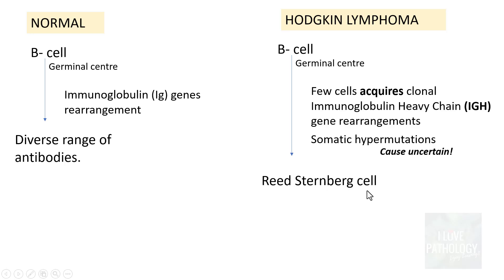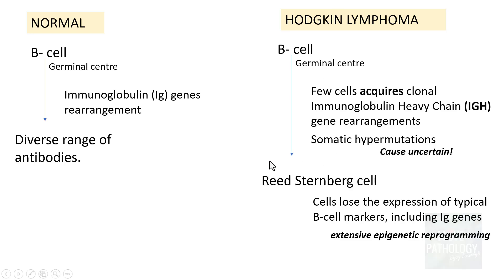The cause of somatic hypermutation and clonal IGH gene rearrangement is not really known. Once this happens, the B cell gets transformed into a neoplastic cell called the Reed-Sternberg cell. Although the Reed-Sternberg cell is a derivative of B cells, these cells lose the expression of typical B-cell markers including immunoglobulin gene markers. The reason for loss of B-cell markers is extensive epigenetic reprogramming. The RS cells instead express CD15 and CD30.